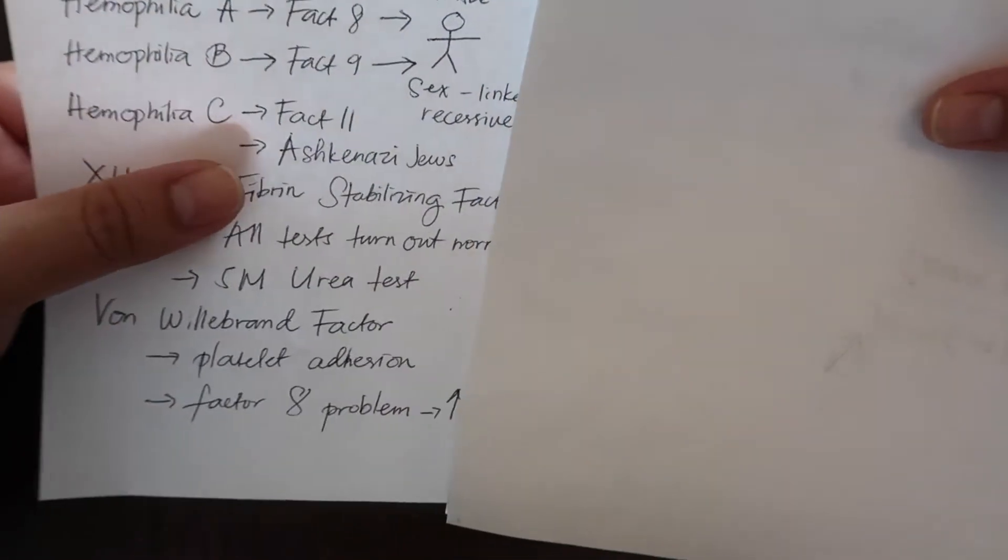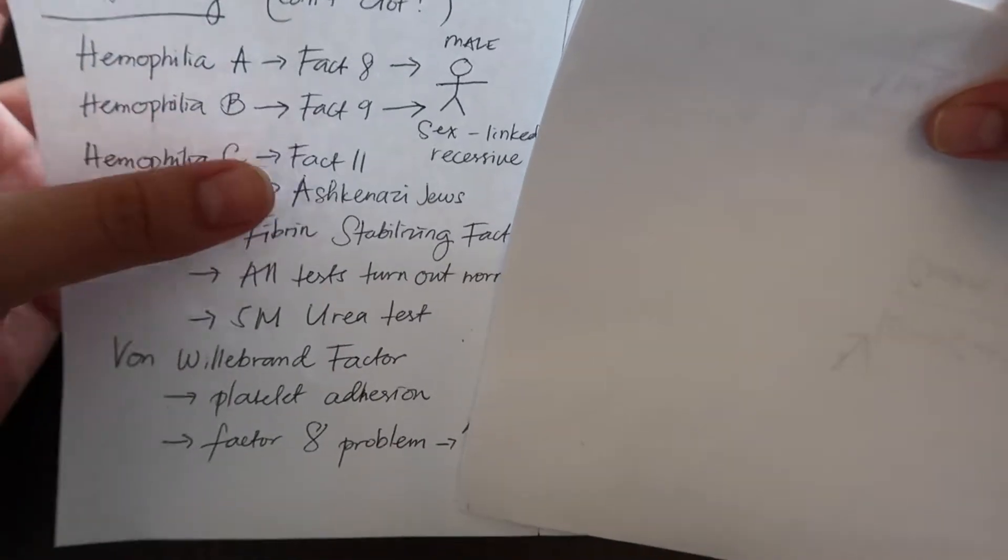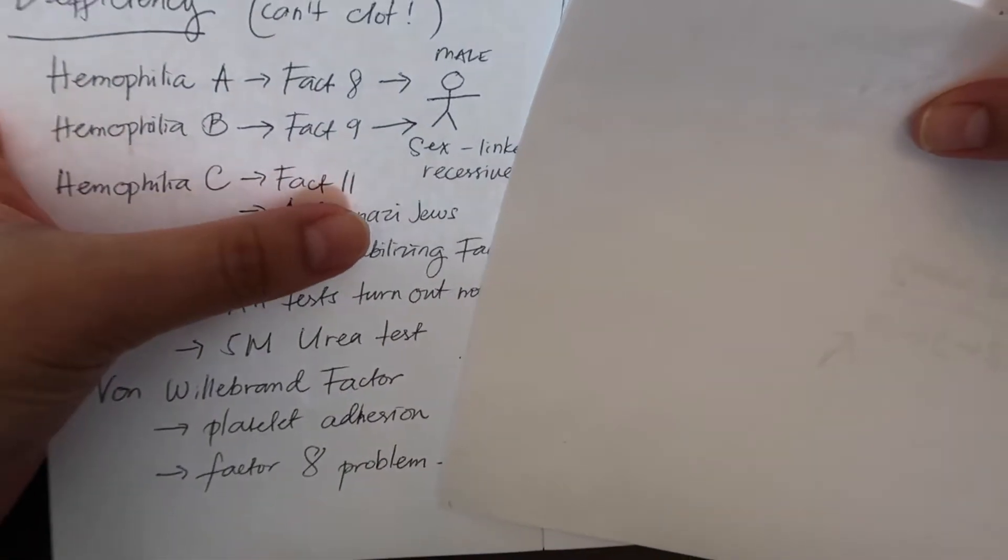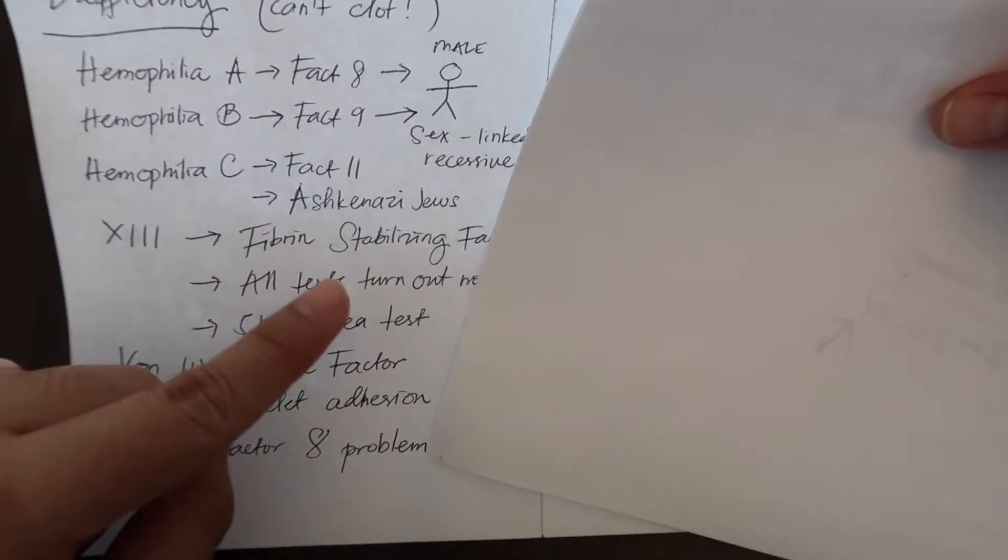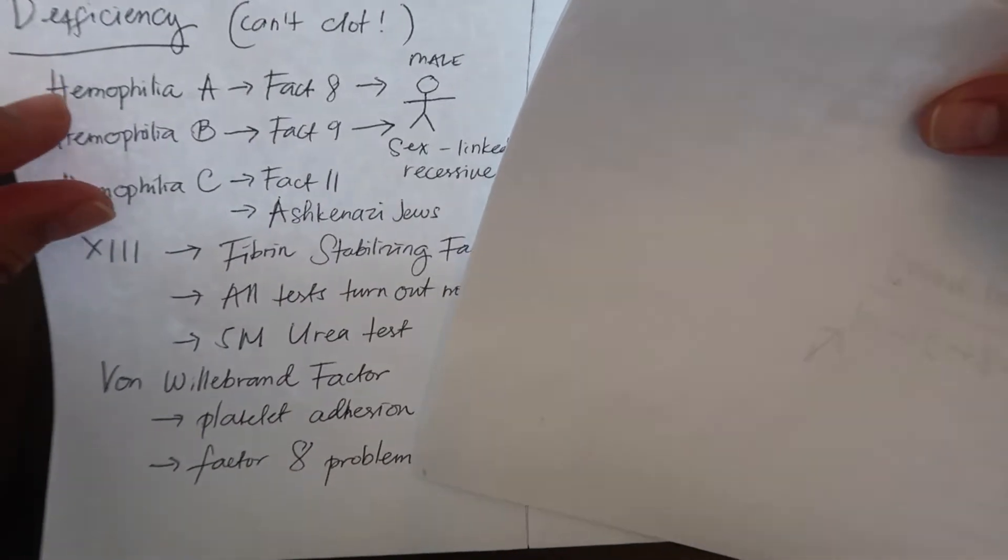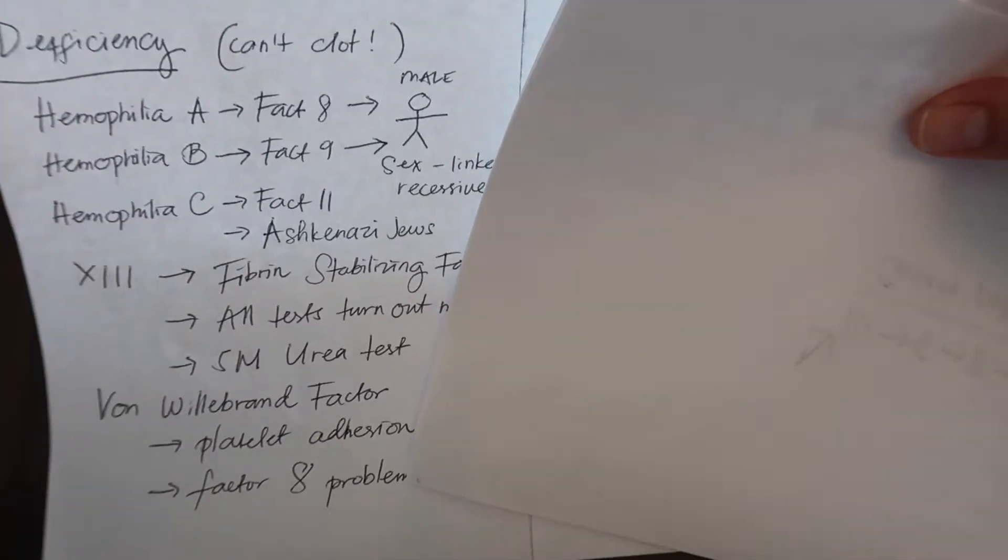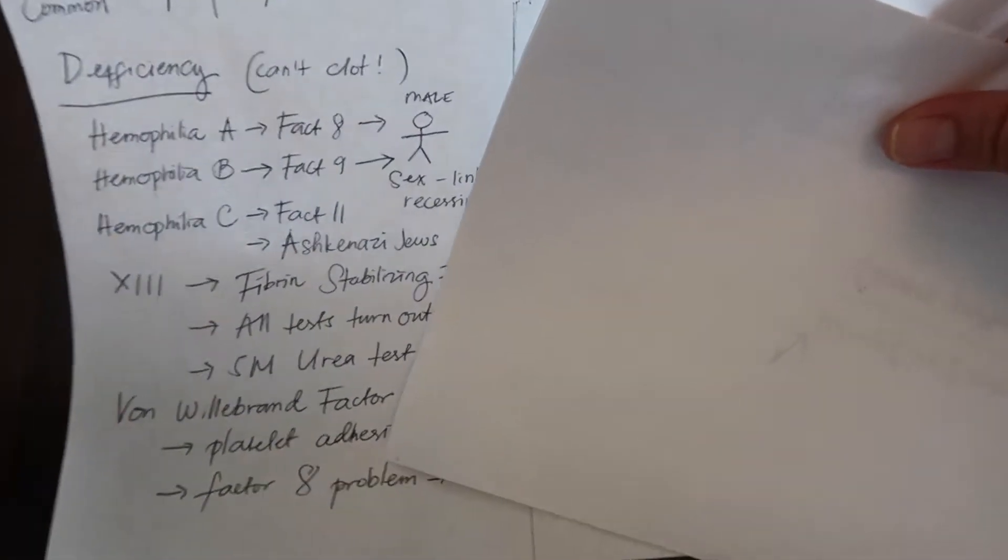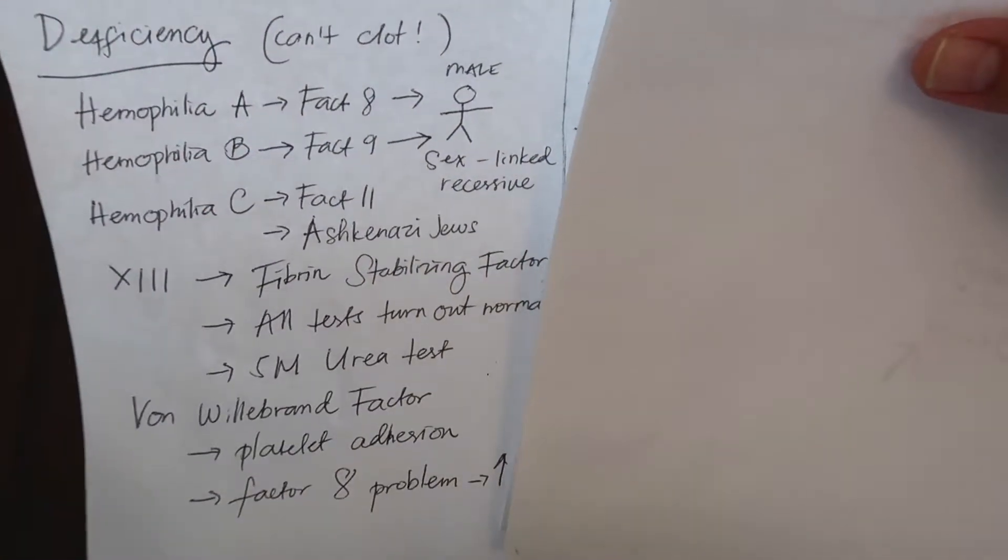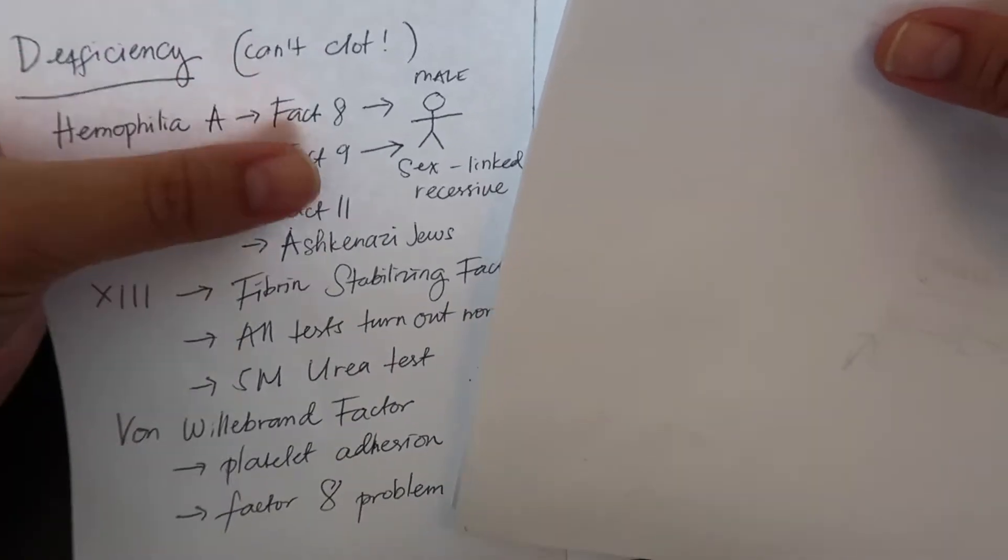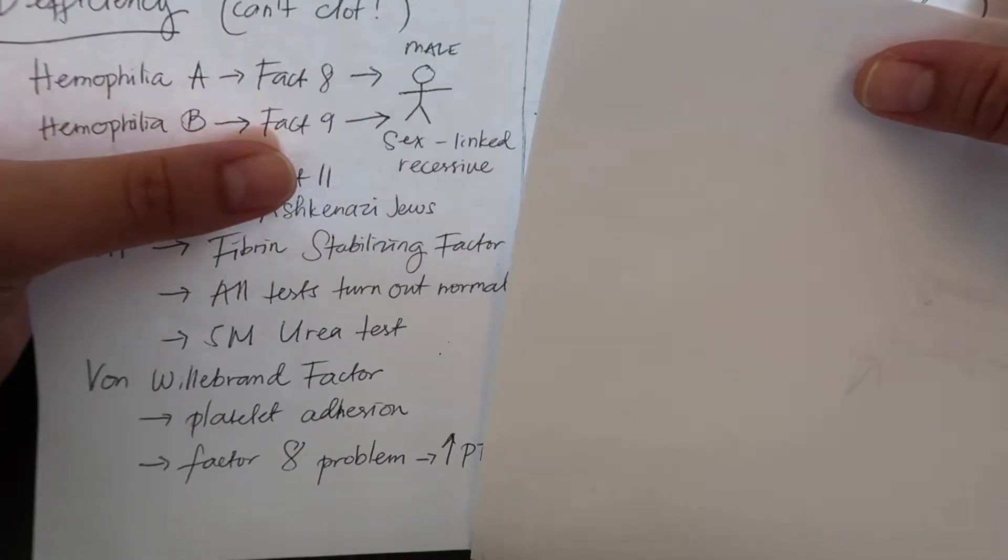Hemophilia C however is not sex-linked, so it can show up in girls and boys. The factor responsible for it is factor 11. It's more commonly found in Ashkenazi Jews, and that's the main thing you'd pick up in an exam question. If it says Ashkenazi Jews, hemophilia C. If it's sex-linked, you can choose between 8 and 9 depending on the clues. Another word for factor 9 is Christmas factor, so hemophilia B is like Christmas disease.